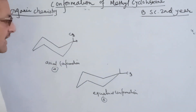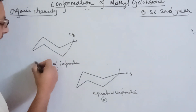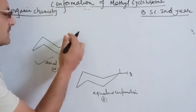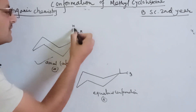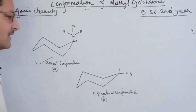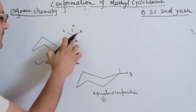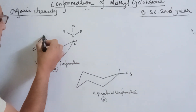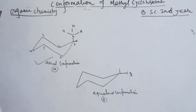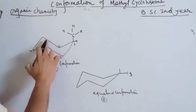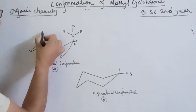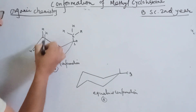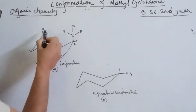Now we are going to talk about the methyl group. The methylcyclohexane in equatorial position is the most stable. We also have axial hydrogens, and we can see the axial hydrogens as well.